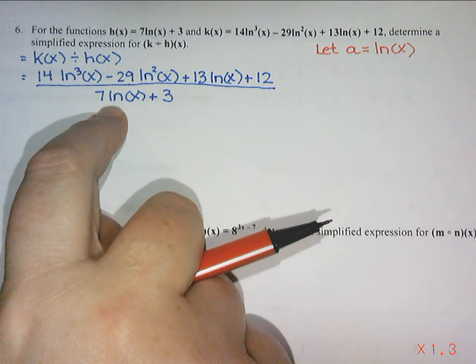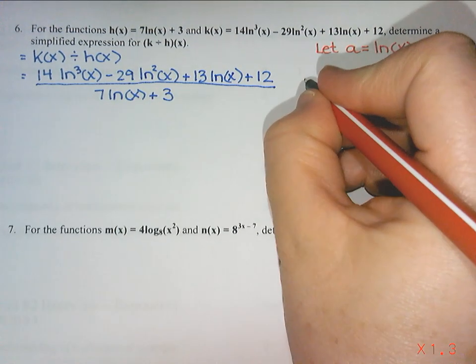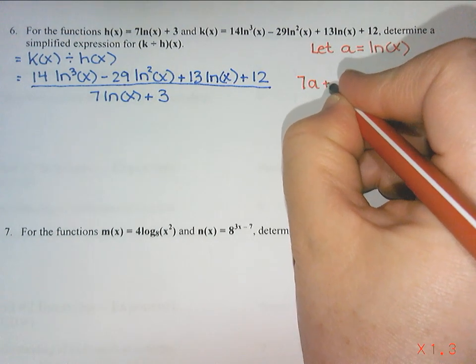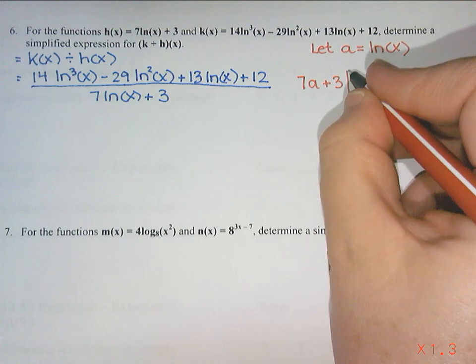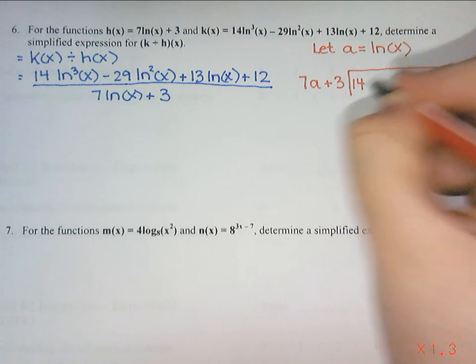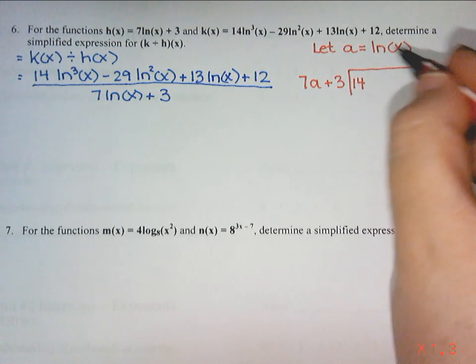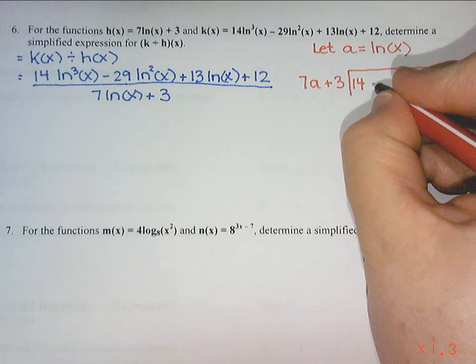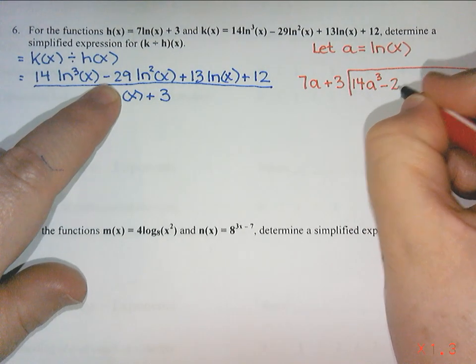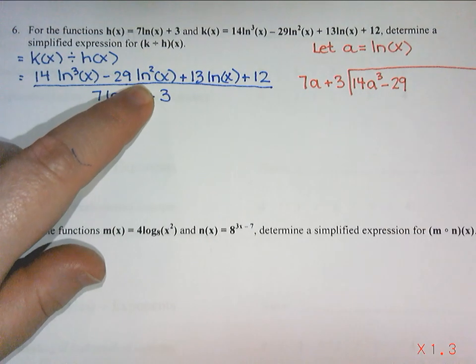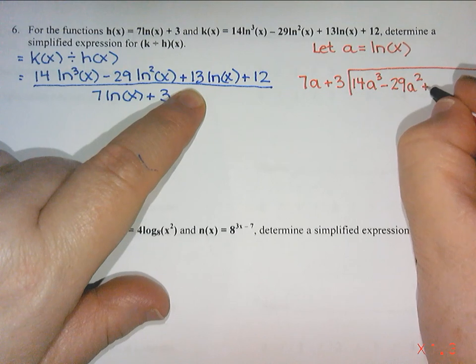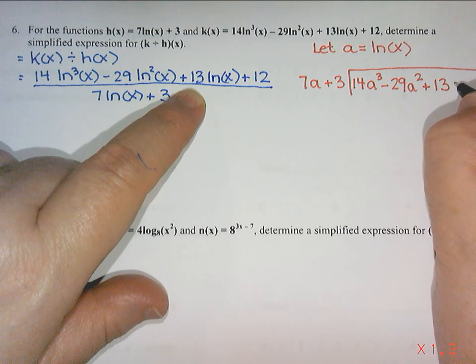We want to know how many times does 7 ln x, ln x is a, plus 3, how many times does 7a plus 3 go into 14. And then ln x cubed, so ln x is a, and then that's all cubed, so a cubed. And then minus 29, and then I have ln squared x, so that's going to be a squared. And then plus 13 ln x, or 13a.